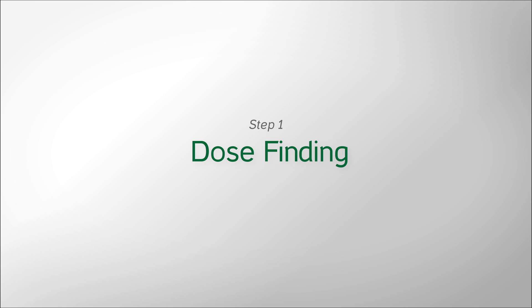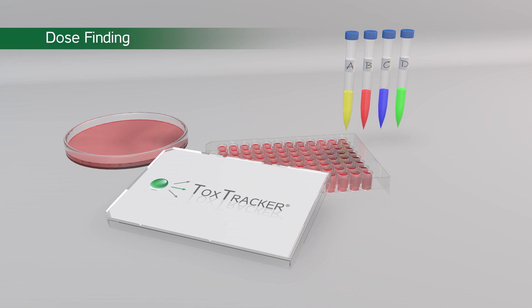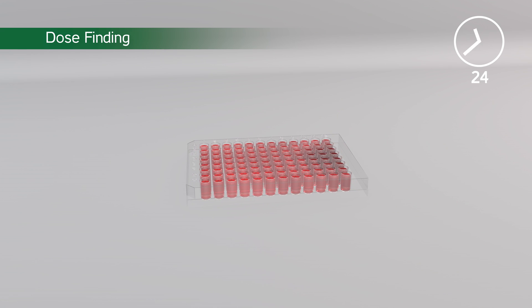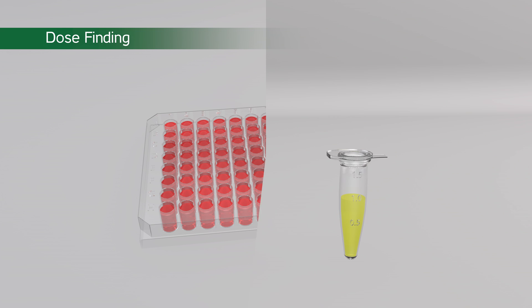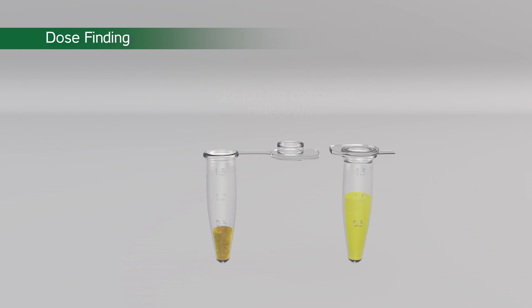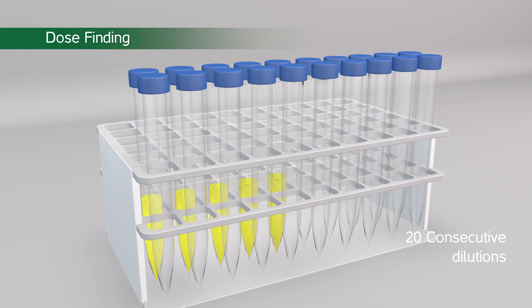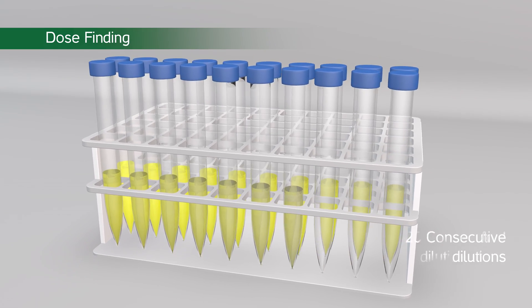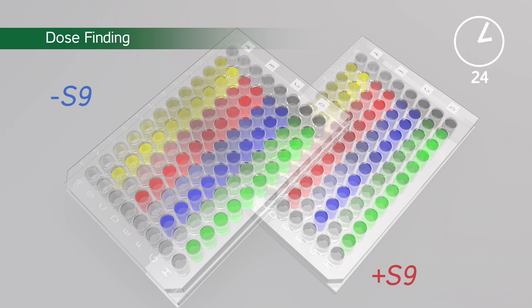For every Toxtracker and Toxtracker ACE test, first, a broad cytotoxicity dose range finding is performed. On day one, wild type stem cells are seeded in 96 or 384 well plates. On the second day, the test materials are dissolved in DMSO or water. Then, the stem cells are exposed to 20 consecutive dilutions, typically in two-fold steps, in absence and presence of an S9 metabolizing system.